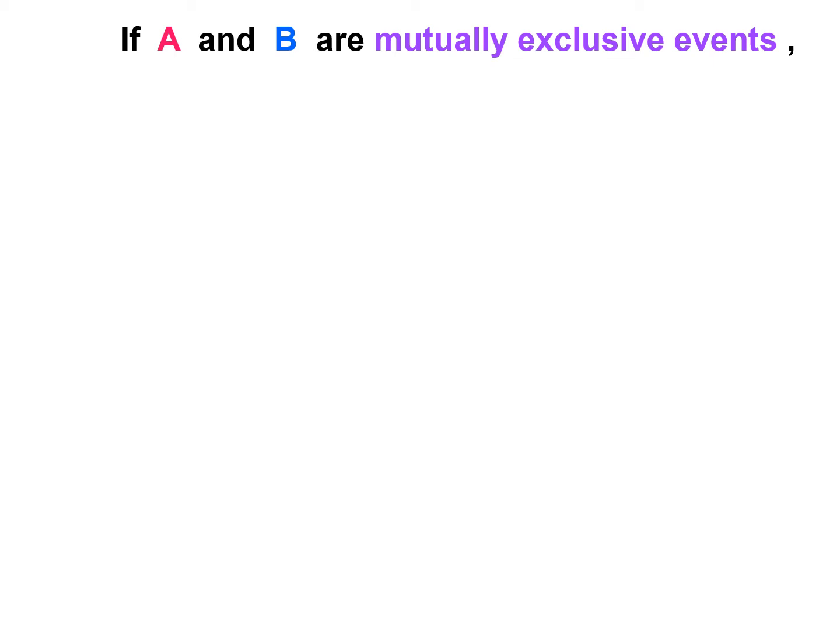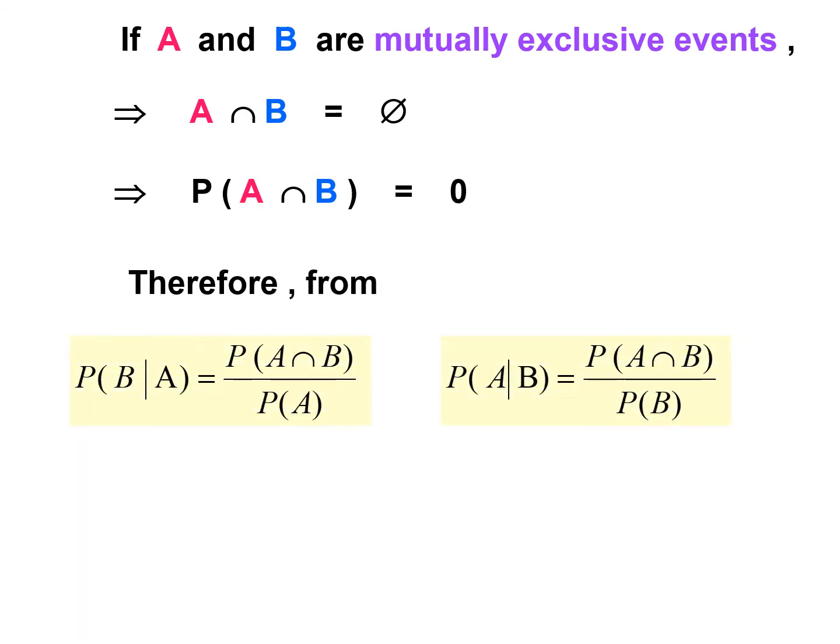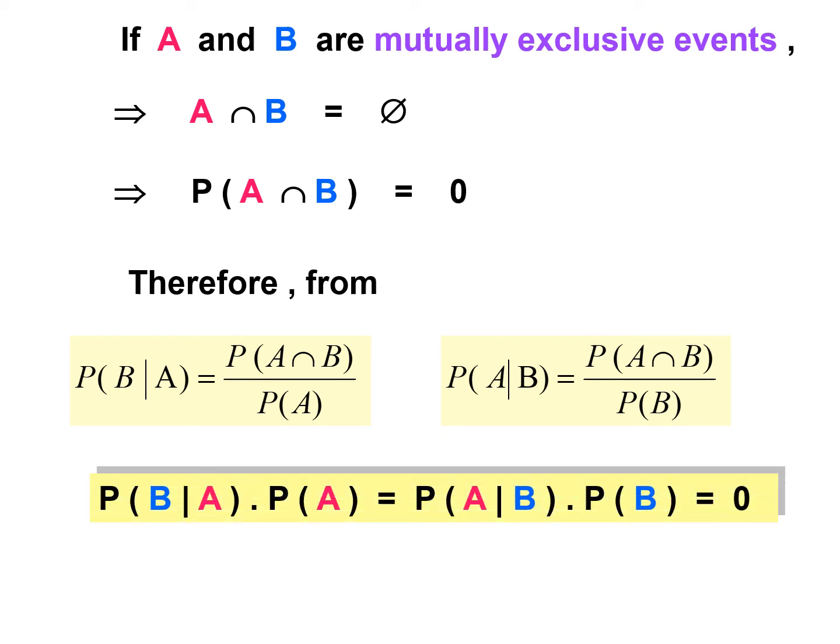If A and B are mutually exclusive events, A intersect B equals the null set, then P(A∩B) equals 0. Therefore, P(B|A) equals P(A∩B) over P(A), and P(A|B) equals P(A∩B) over P(B). When the intersection is 0, both conditional probabilities equal 0.